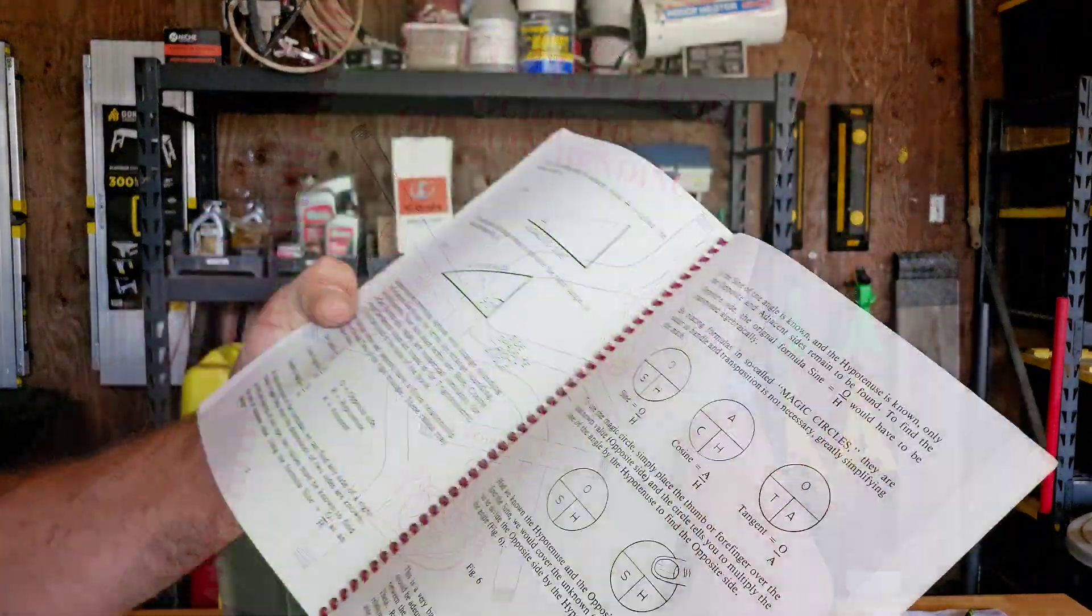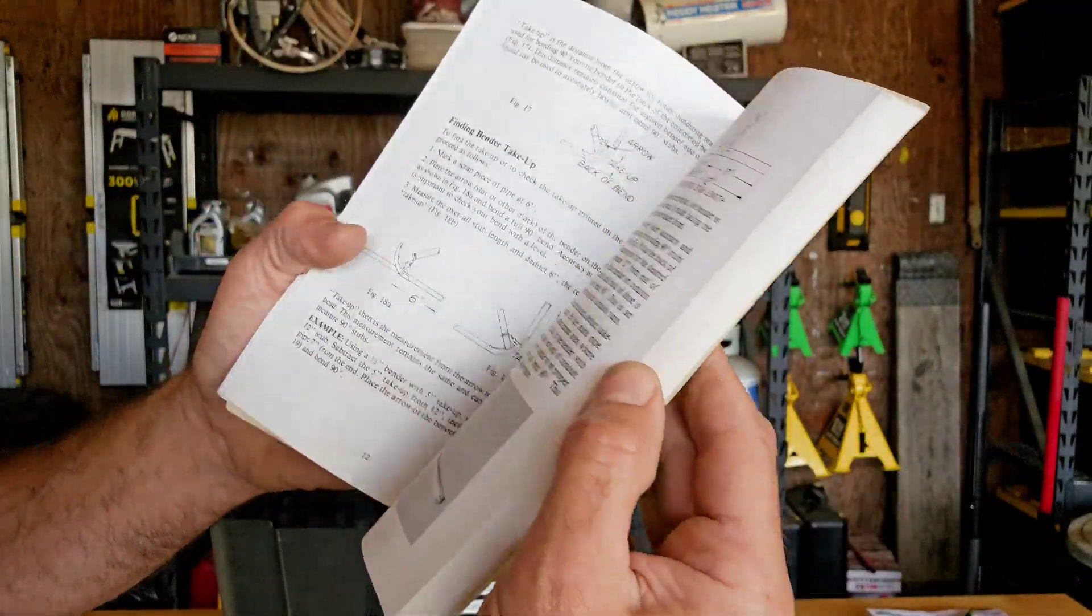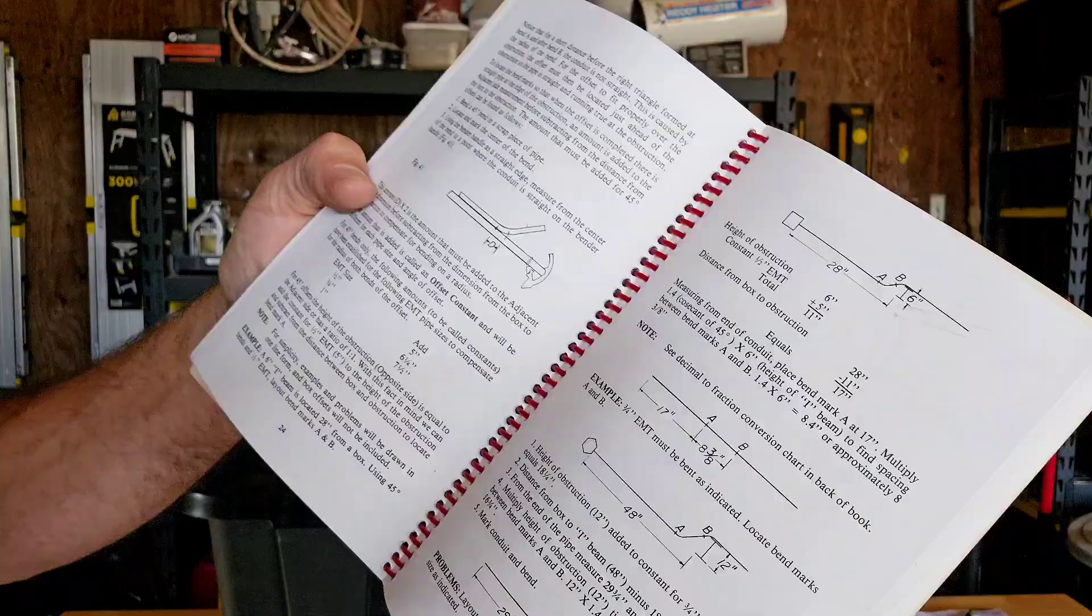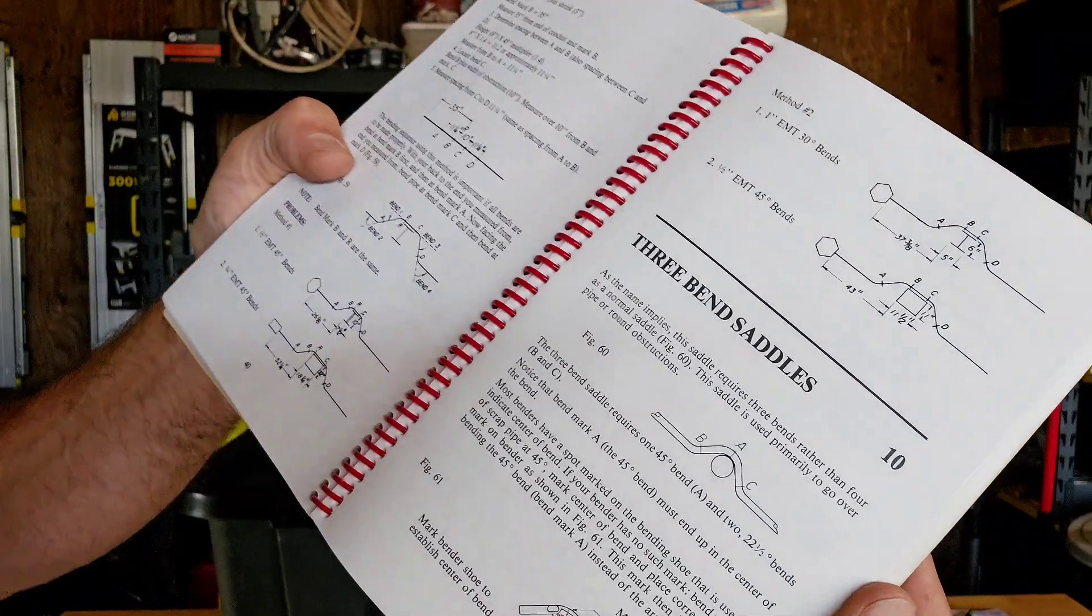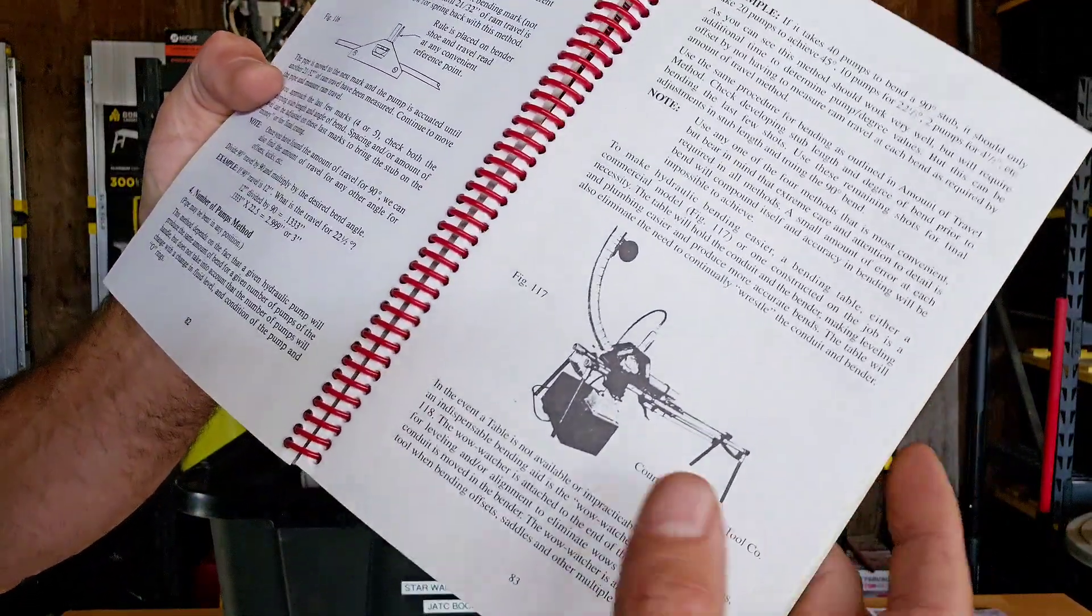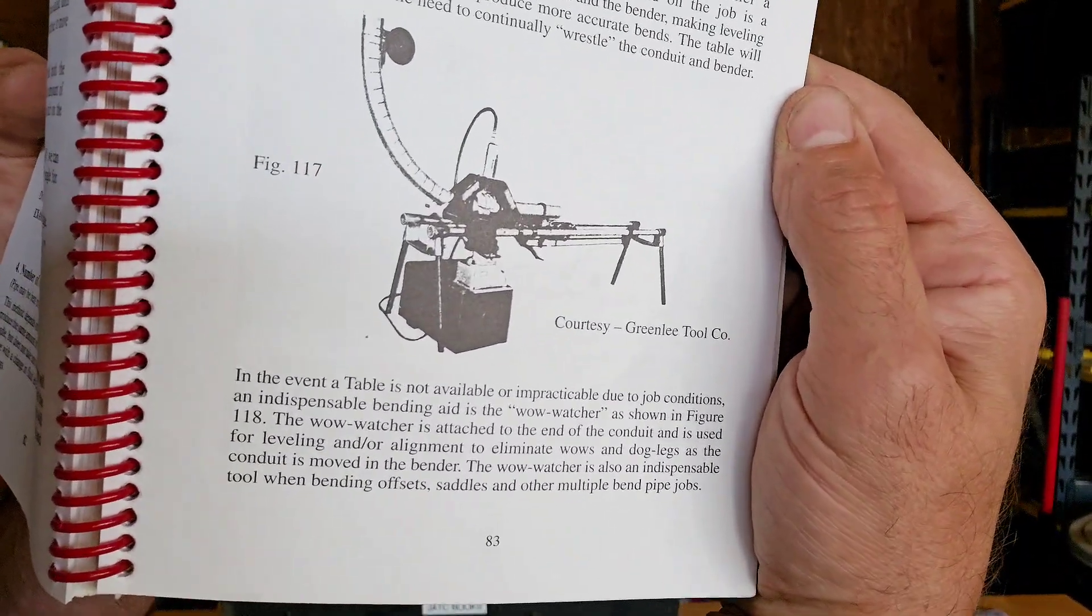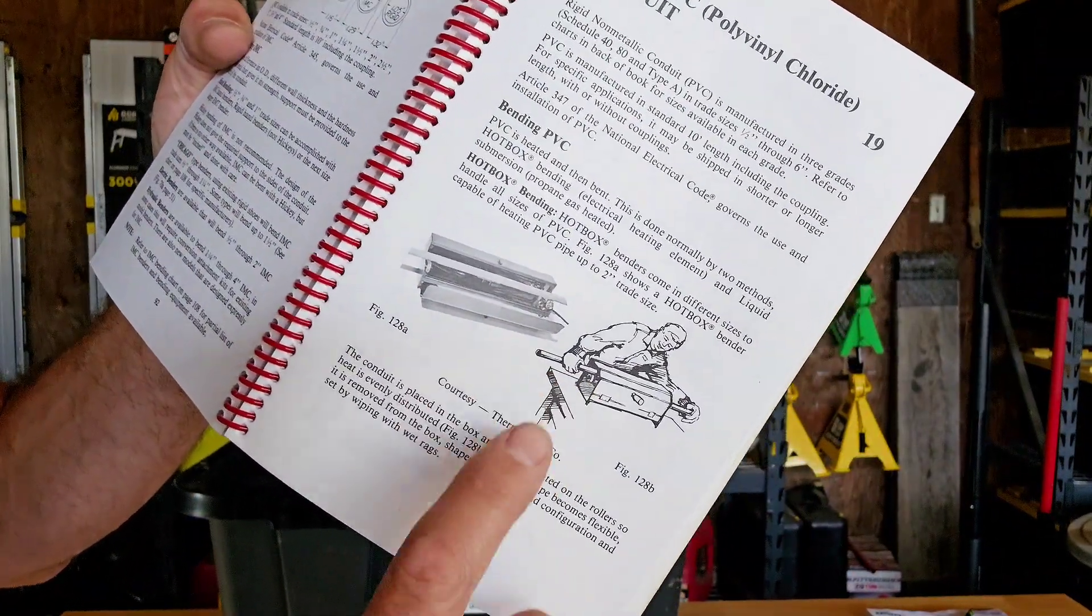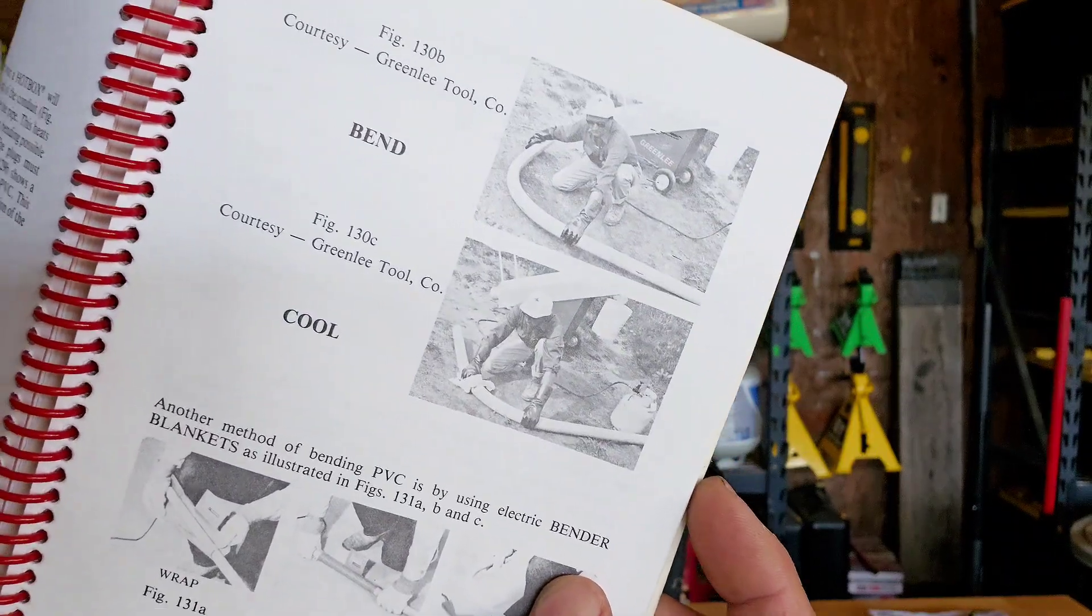Electrician's guide to conduit bending. Your basic functions, your trigonometry that we had to learn in school. Different ways of your take up, back of bend, all that kind of stuff. Different offset calculations, saddles. I had to do three bend saddles, four bend saddles. Using like an old Greenlee rail bender, and using the hotbox to melt your PVC conduit down to form it into offsets and 90s.